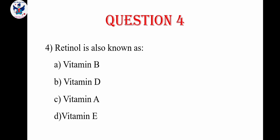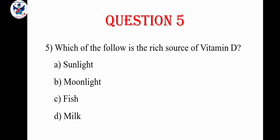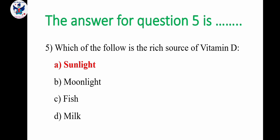Question number 4: Retinol is also known as. It is related to vitamin A, so the other name is vitamin A. Question number 5: which of the following is the rich source of vitamin D? Options are sunlight, moonlight, fish, milk. The correct answer is sunlight.